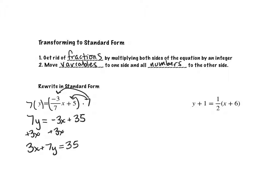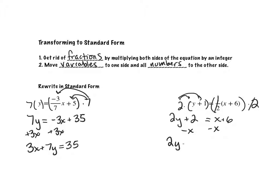I can do the same thing with a point-slope form equation. I still want to get rid of my fraction — the denominator is two — so I multiply everything by two. That reduces the fraction to one, leaving x plus six on one side, and I distribute the two on the other side to get two y plus two. Moving the variables over: two y minus x plus two equals six, then subtract two from both sides, giving two y minus x equals four. And there is my standard form.